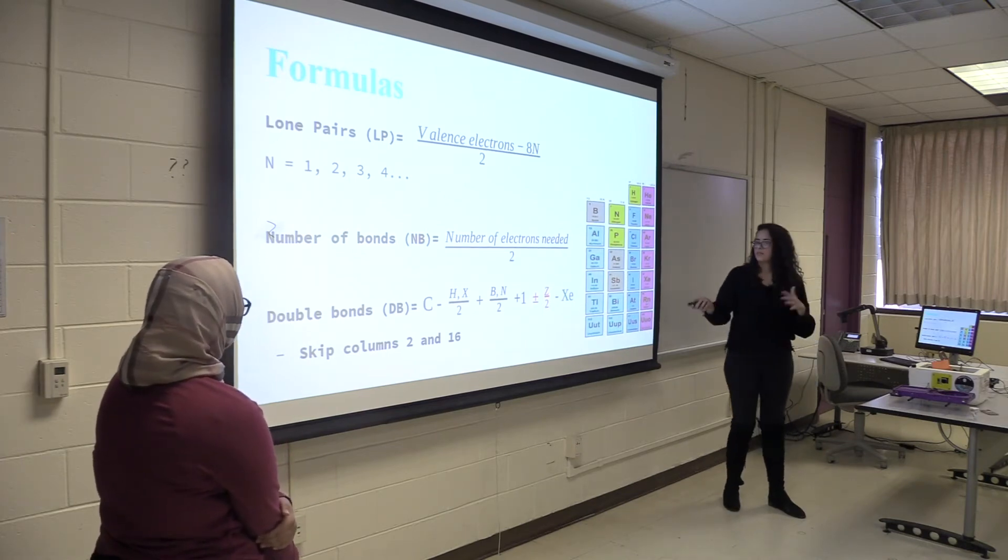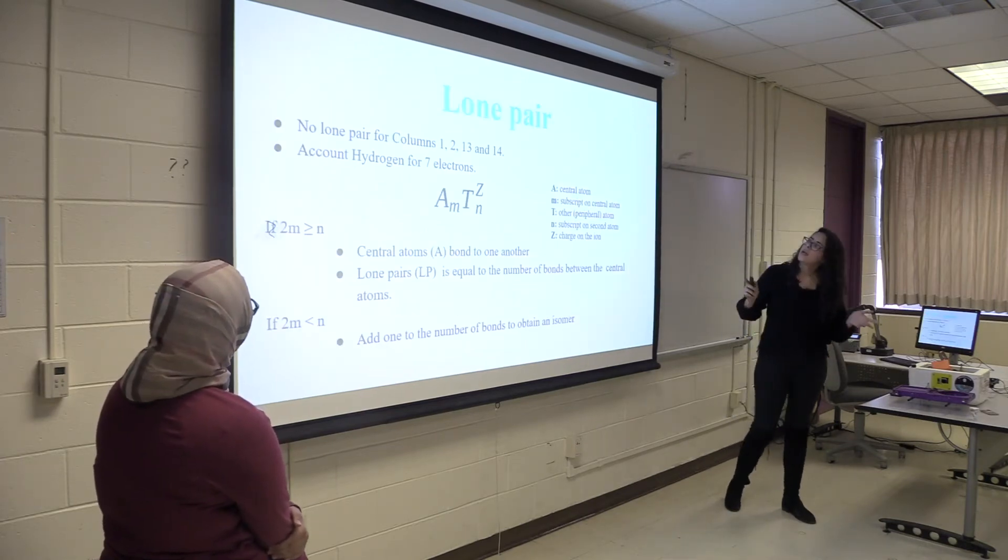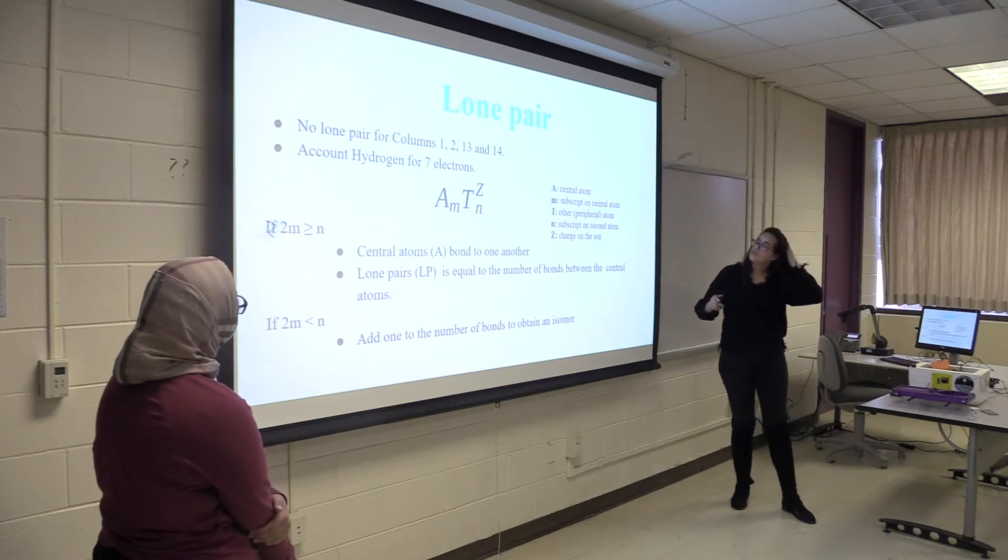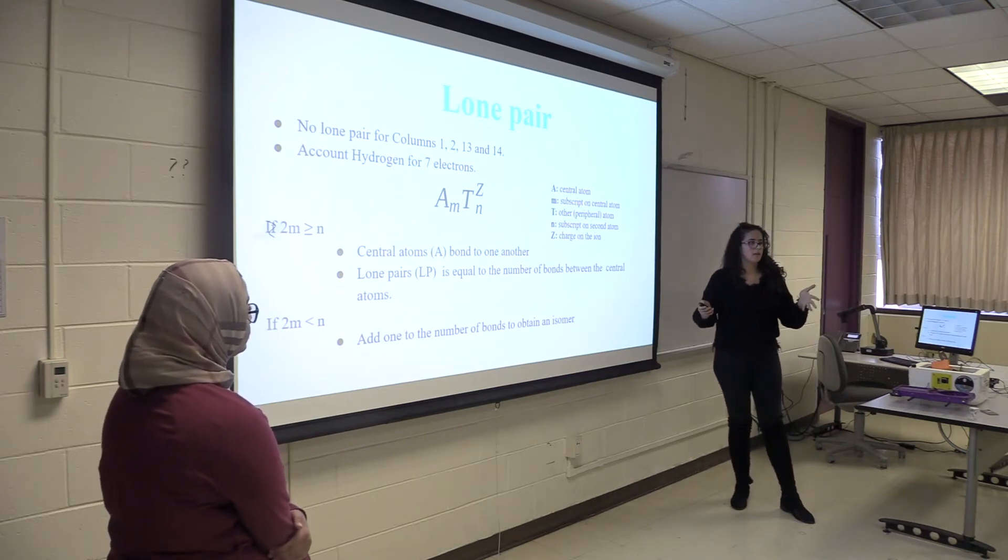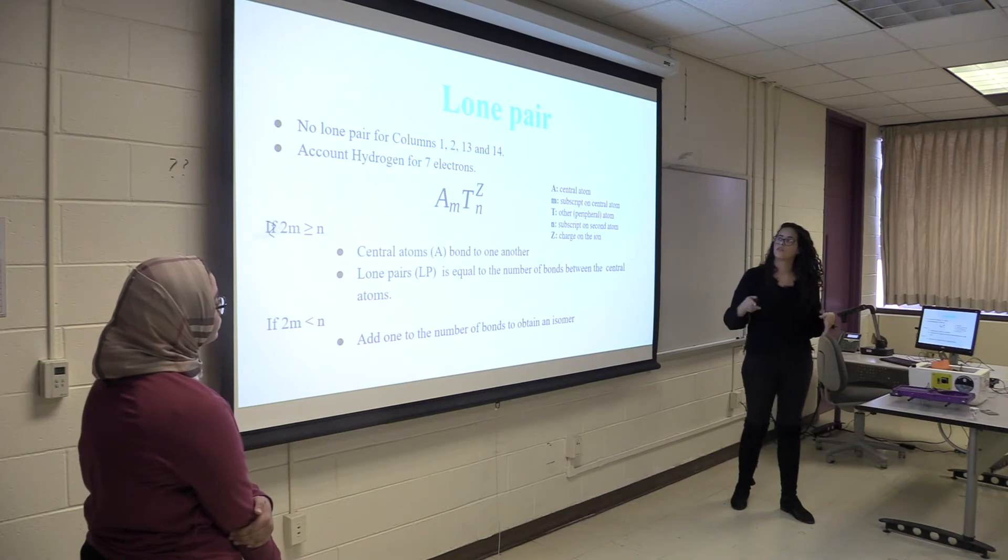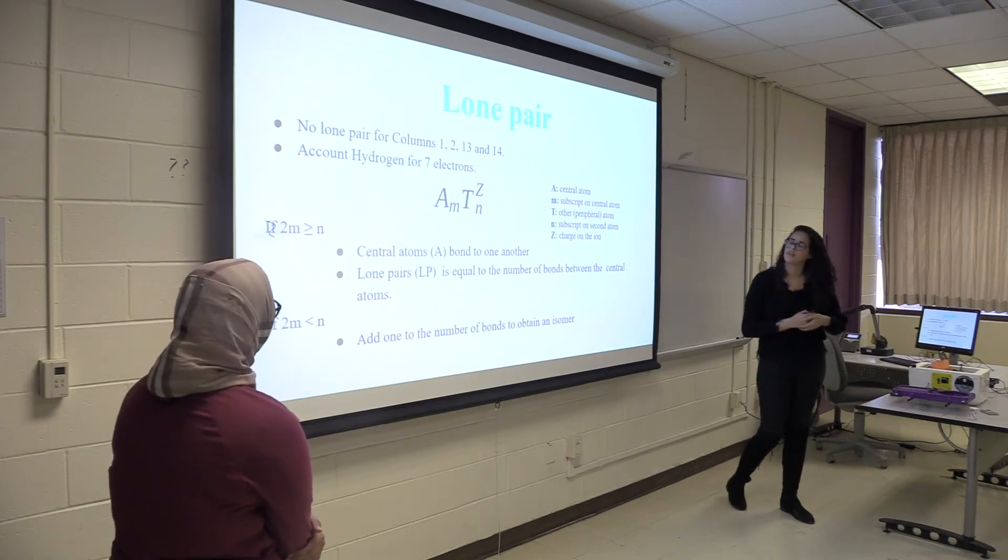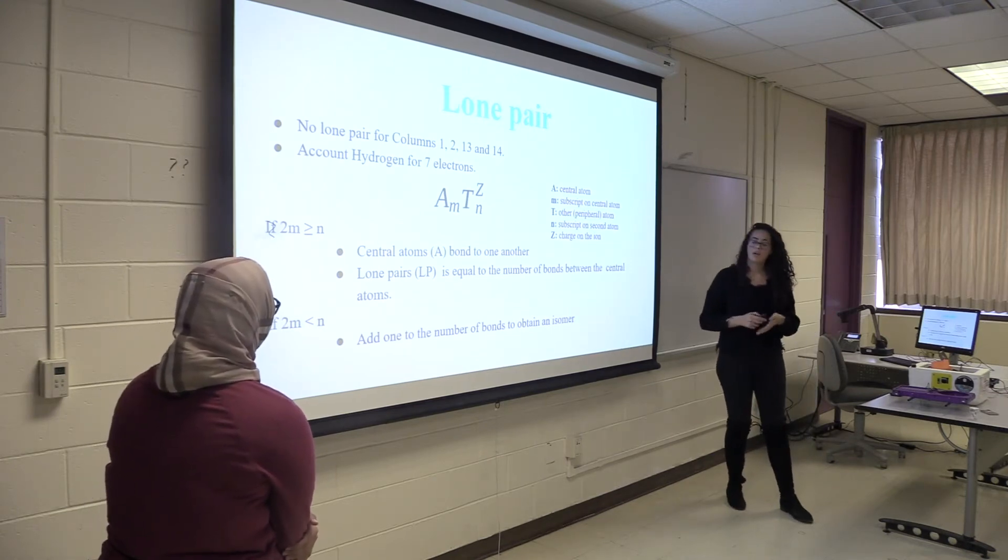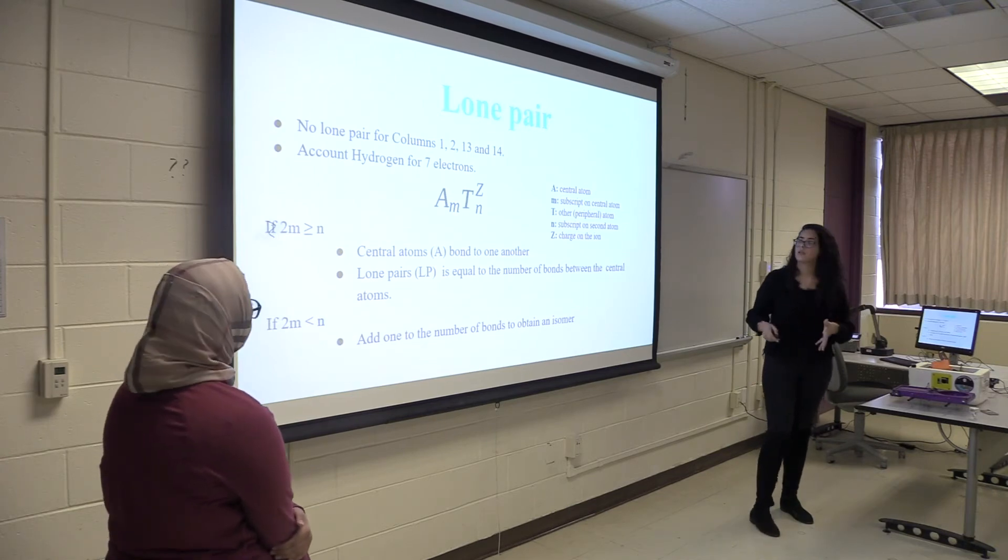And you skip columns two to 16. And for lone pairs, you don't do the lone pair calculation, the one in the previous slide, for columns one, two, three, thirteen, and fourteen. And you have to account hydrogen for seven in the formulas.